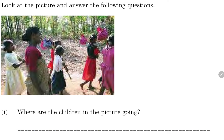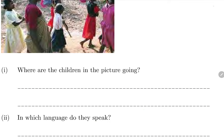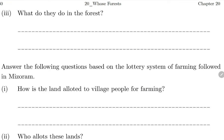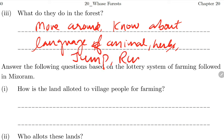Look at the picture: children are going to the forest carrying things on a stick. Where are the children going? To the forest. In which language do they speak? Kuduk language - they are from the Kuduk community. What do they do in the forest? They move around, learn about animals and birds, learn about herbs from their didi, make baskets, run, jump, climb trees, and sing songs in their language.